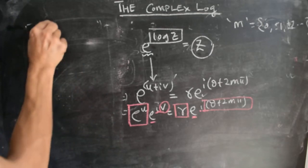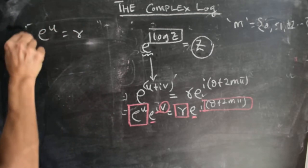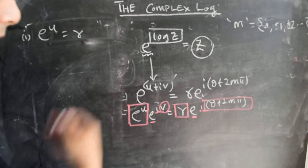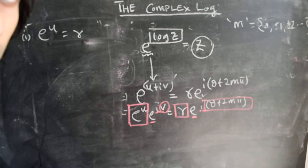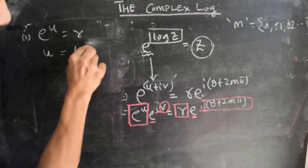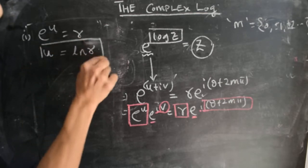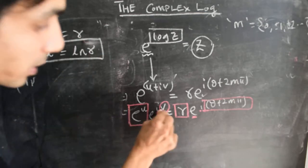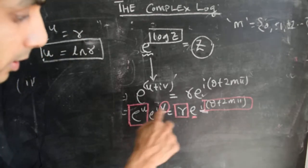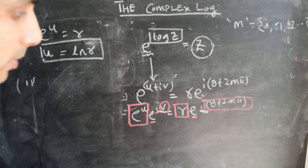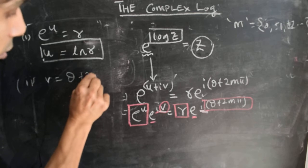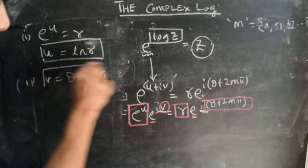From comparing the amplitudes, we get e to the power of u equals r. Since u and r are both real, we can take the real log of both sides, and we find that u equals ln(r) — the natural log of r. That's our first relation. Then, comparing the exponents of the exponentials carrying the i-factors, we find that v equals θ + 2mπ. That's our second relation.